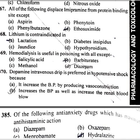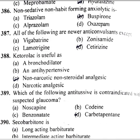Hemodialysis is useful in poisoning with all except diazepam. Dopamine intravenous drip is preferred in hypotensive shock because it increases blood pressure as well as increases renal blood flow. Of the following anti-anxiety drugs, which has maximum antihistaminic action? Hydroxyzine. Non-sedative, non-habit-forming anxiolytic is buspirone.